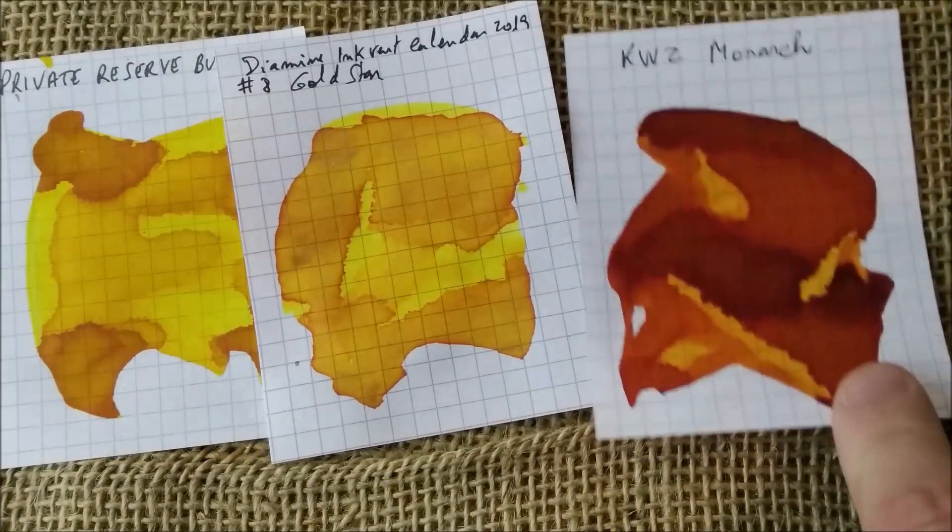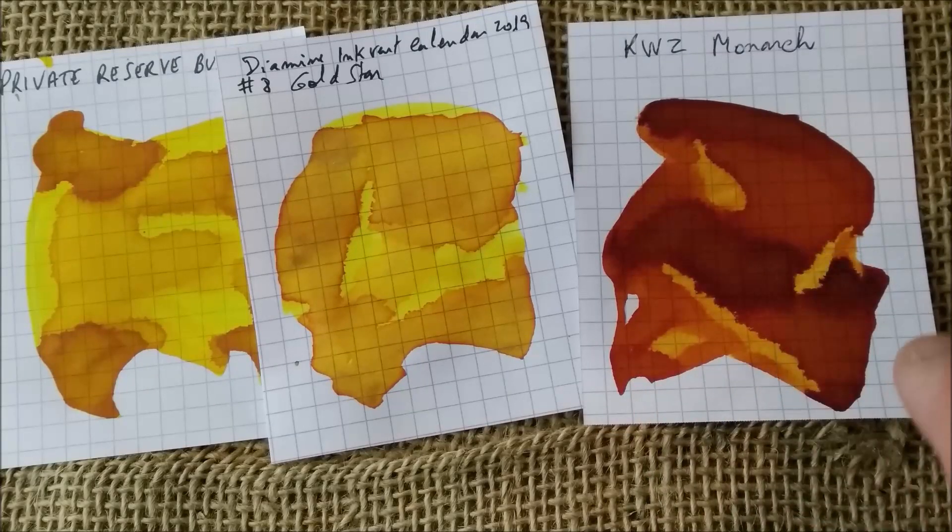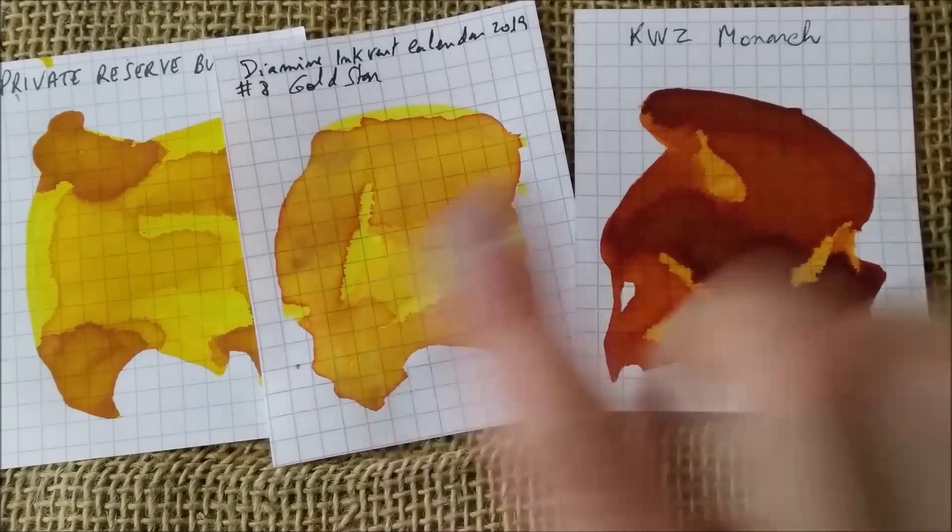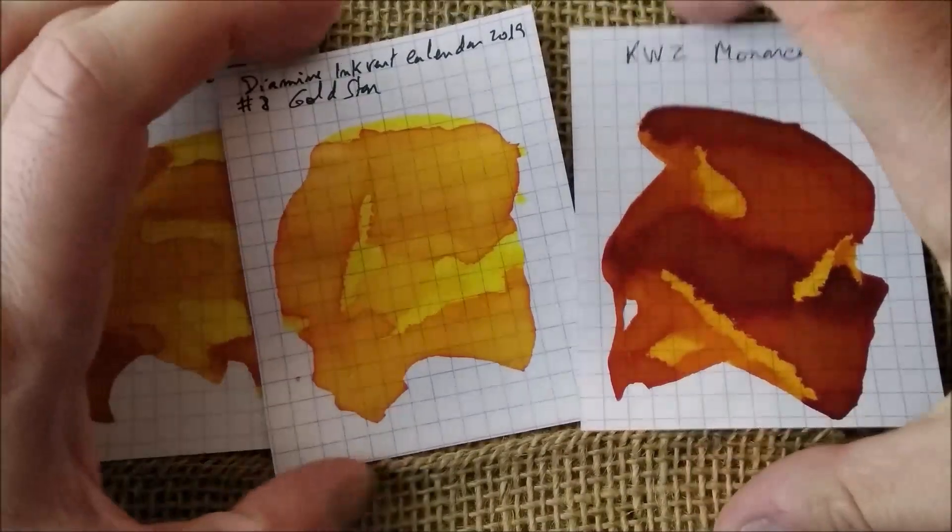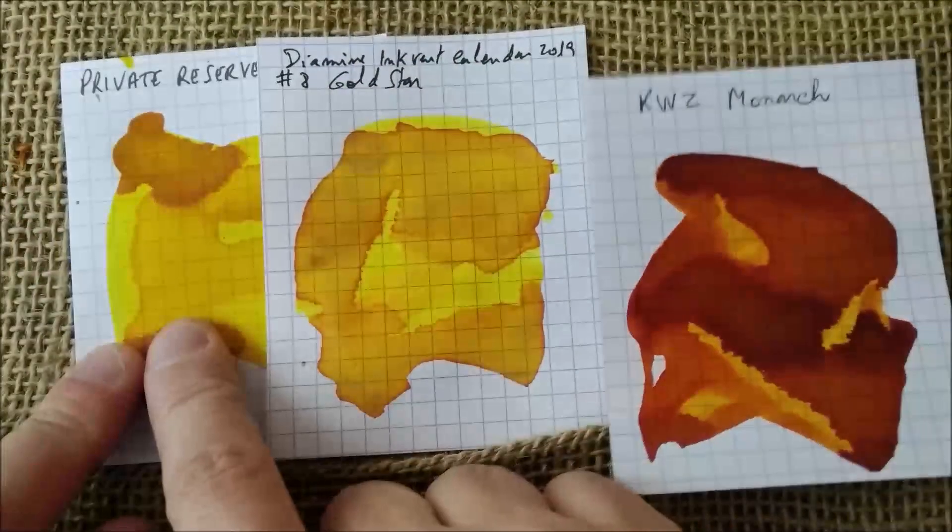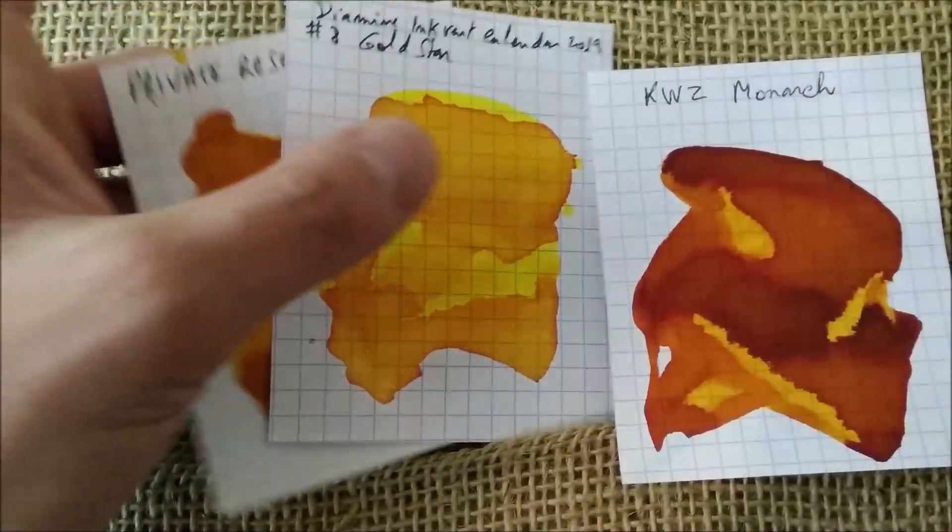And then we have the Monarch, which is really an orange, a dark orange color. So it's not that yellow. This is just my comparison. I don't have that many yellow inks. I would say Private Reserve is very similar but with no gold shimmer.